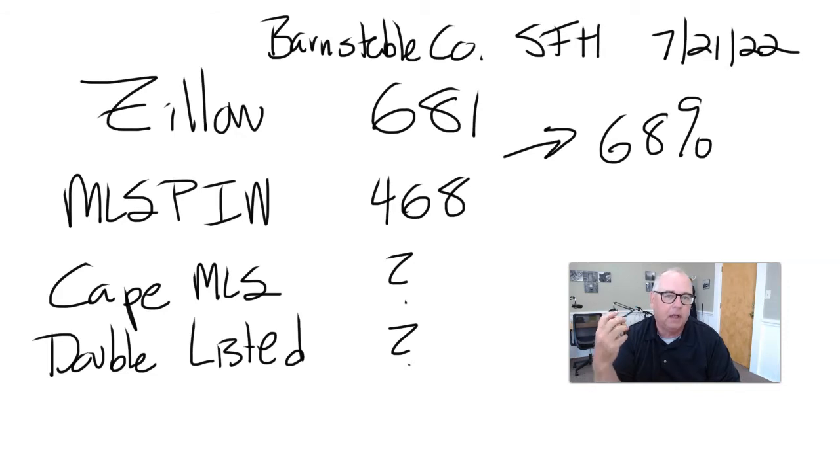That means there are probably a lot of agents out there that are members of MLS PIN and the Cape Realtors Association, or the Cape MLS. And yeah, that's really inefficient. It means there's a lot of agents out there paying memberships to two MLSs. Very expensive.